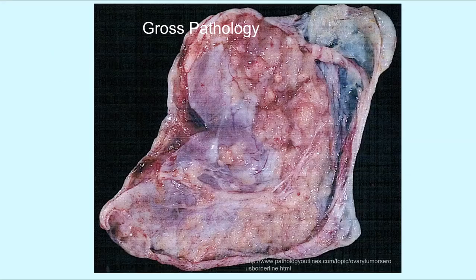On gross pathological examination, serous BOTs can be seen as a single cyst, also known as unilocular, or have multiple cysts, or multilocular. About one-third of patients have bilateral BOTs.